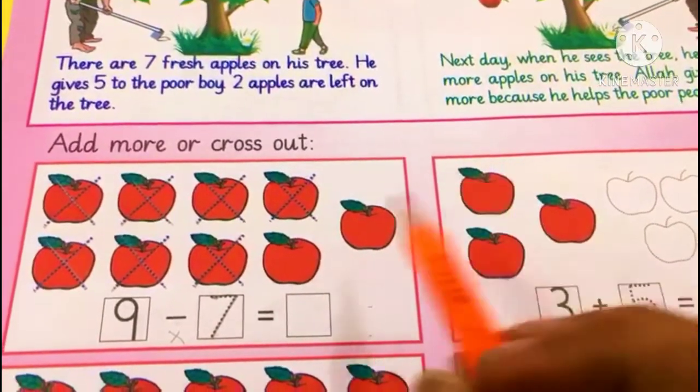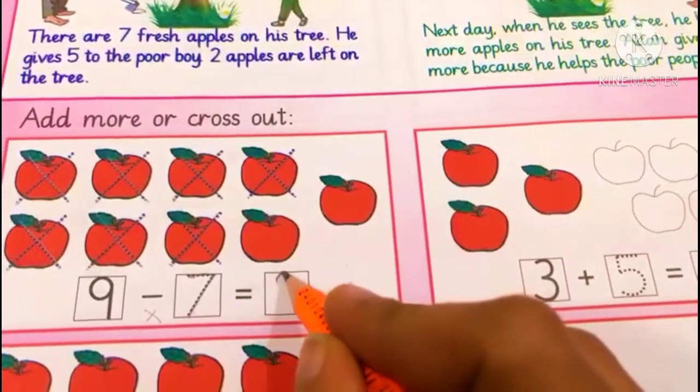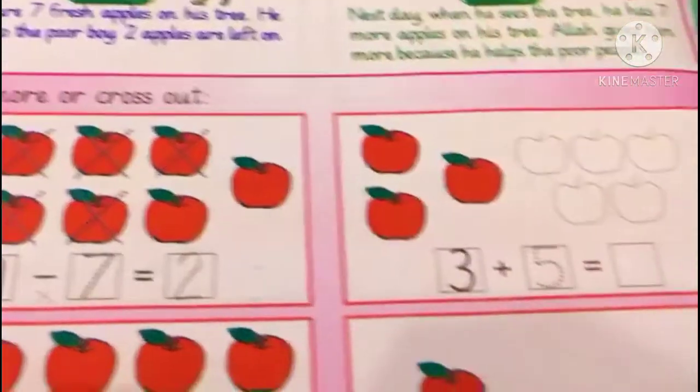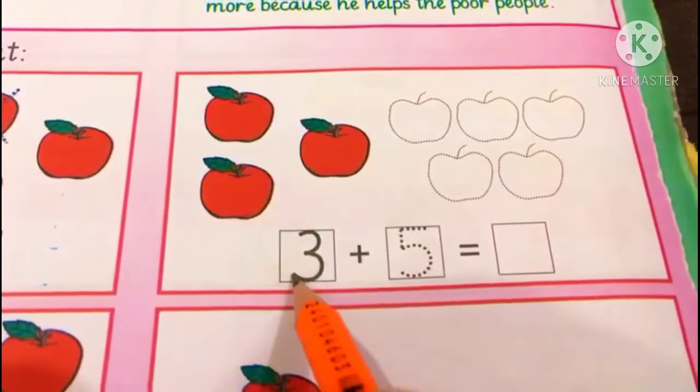Now how many are left? 1, 2. 2 are left. When we cross 7 apples out of 9, 2 are left. Now look at the next box. How many apples?